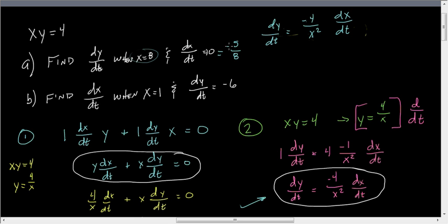Again, we do the same thing down in here with B. Find dx/dt when x is 1. So we throw a 1 in for x. Negative 4 over 1 squared is just negative 4. dy/dt is negative 6. So we're going to have negative 6, and then we're going to have to divide by negative 4 on both sides. And when we do that, we get 3 halves.